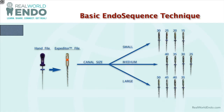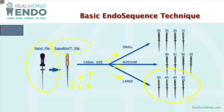This slide shows the algorithm for choosing the right procedural pack. You start with a size 10 hand file to confirm a patent canal, then use the expediter file to determine whether to open a small, medium, or large pack. For this anterior tooth case, we're going to a large pack because it's a fairly large canal, so I'll be using sizes 50 through 35. The EndoSequence is used with a crown-down technique, meaning you start from the largest file and work to the smallest — 50, 45, 40, then 35 — incrementally removing dentin and moving toward the apex.